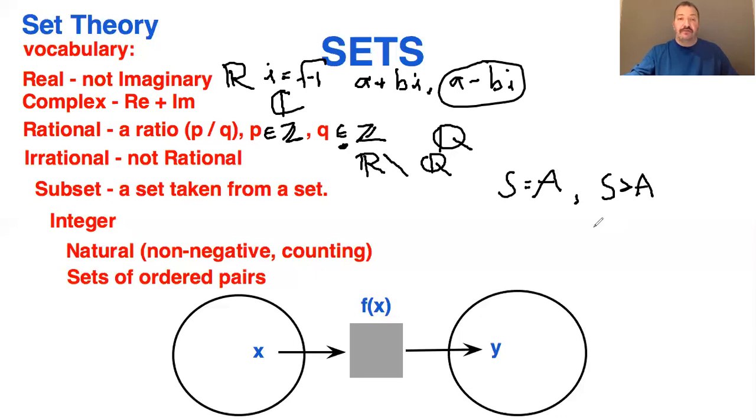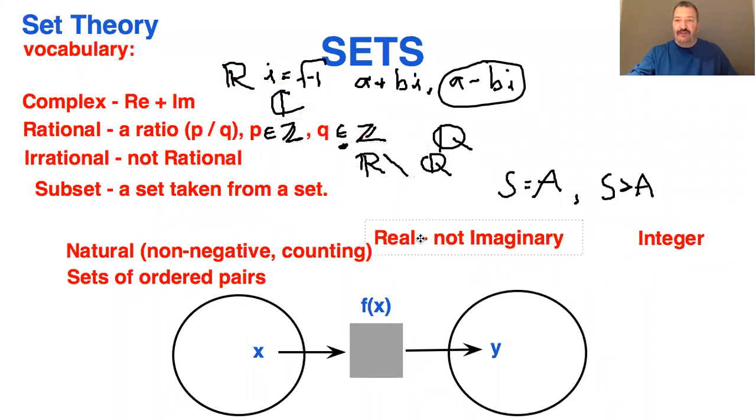Examples of subsets. Right here, we've got integers. So integers are a subset of the real numbers. And of course, there are more real numbers than there are integers.